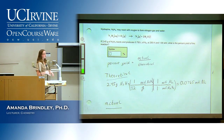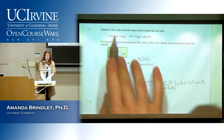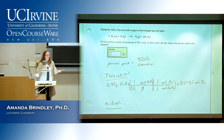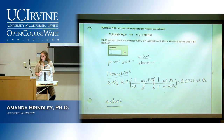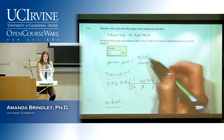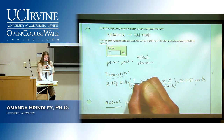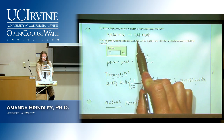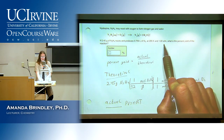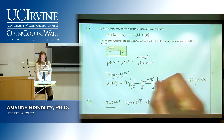Now we have to find the actual yield. We're going to use the ideal gas law. We have volume, temperature, and pressure, so we solve for n. We choose R = 0.0821 L·atm/mol·K since we have liters and atmospheres, and T = 295 K.